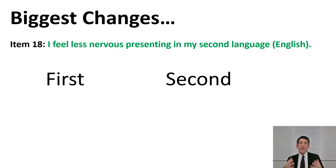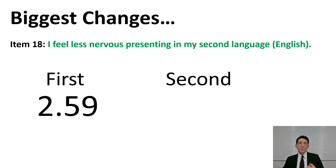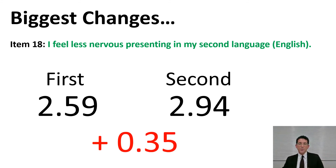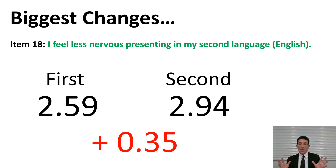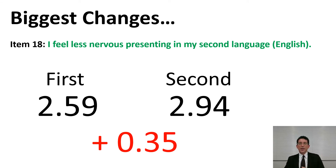Now I would like to talk about the biggest changes that we saw. Item 18 — 'I feel less nervous presenting in my second language, English' — at the beginning of the first semester scored 2.59, and at the end of the first semester it was 2.94. This is a change of 0.35, which is approximately three times the average variance. We believe that after a semester of instruction in English and practicing presentations in English, students seem to feel less nervous. Overall, that's a very good trend.